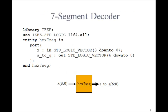And so once we have those, we could just write the VHDL program. The entity, the input x, is 3 down to 0. And the output a_to_g is 6 down to 0.